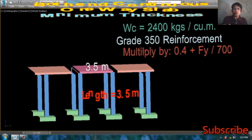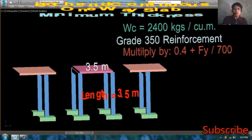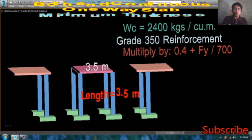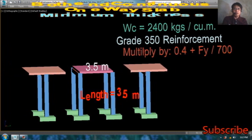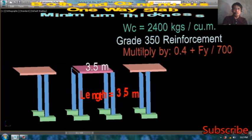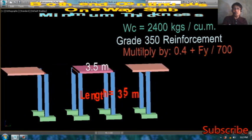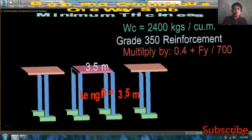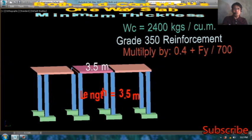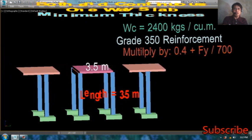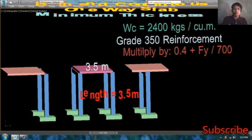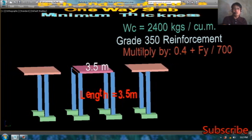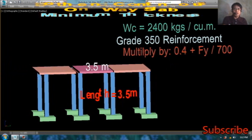Kung grade 350 reinforcement ang gagamitin natin, imumultiply po natin yan sa 0.4 plus FY divided by 700. Ito pong FY pong ito, ito po yung yield strength po ng steel natin. Ito po yung grade 350. Kaya pag-multiply po natin yan is equal to 0.4 plus 350 divided by 700.